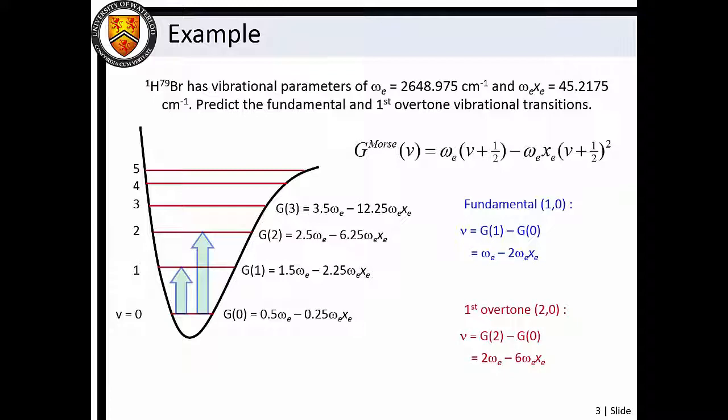We can then substitute our numerical values into the transition expressions to calculate wave numbers of 2558.540 reciprocal centimeters and 5026.645 reciprocal centimeters for the fundamental and first overtone bands respectively.